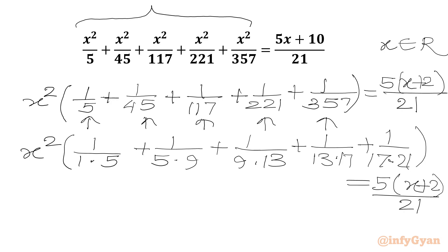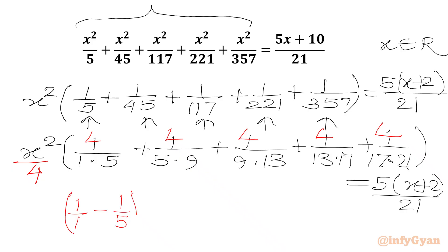Now we will divide and multiply by 4 on the LHS. We multiply each term by 4. Now we will split 4 over 1 times 5 — this can be written as 1 over 1 minus 1 over 5. If we take the LCM we get 5 minus 1 in the numerator and 5 in the denominator, and 5 minus 1 is 4.